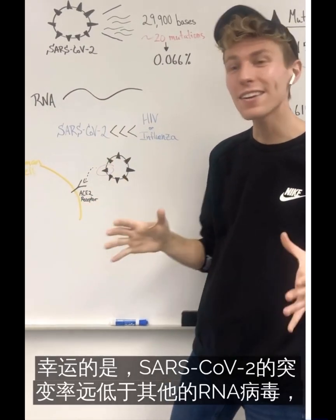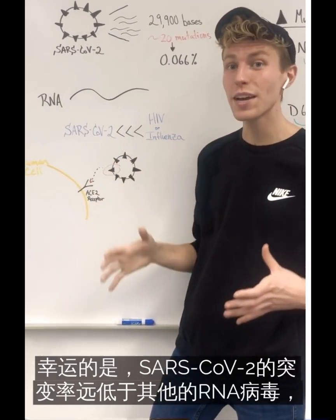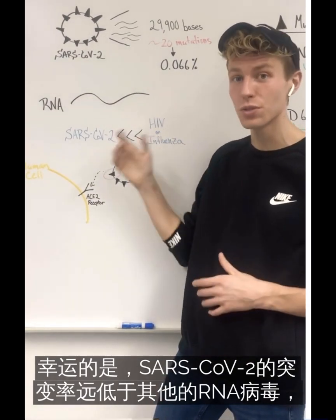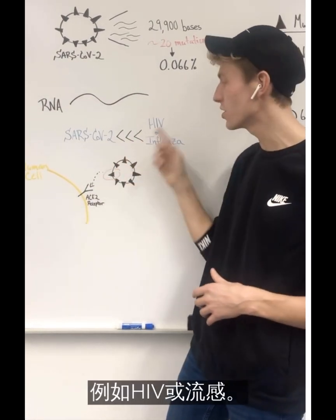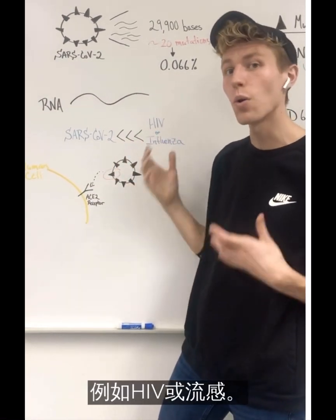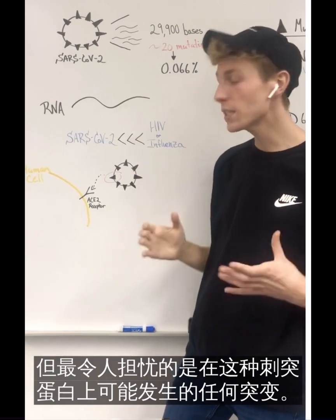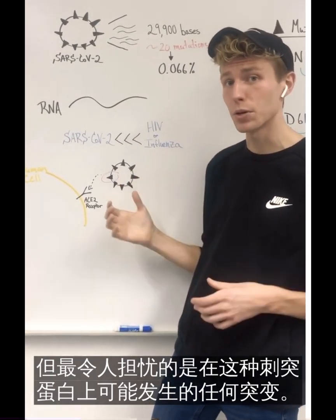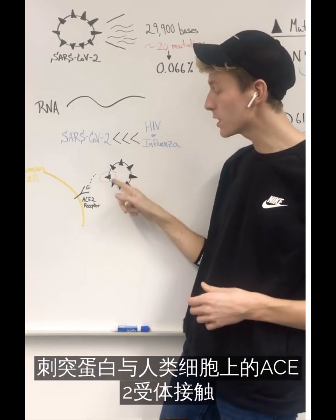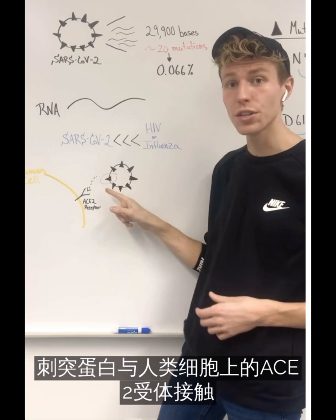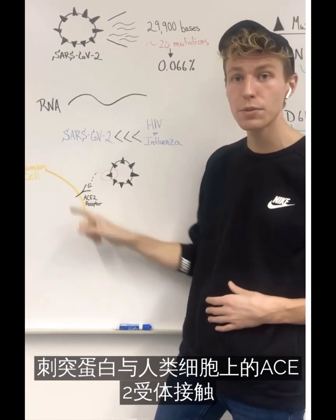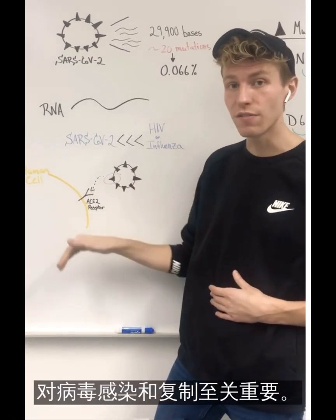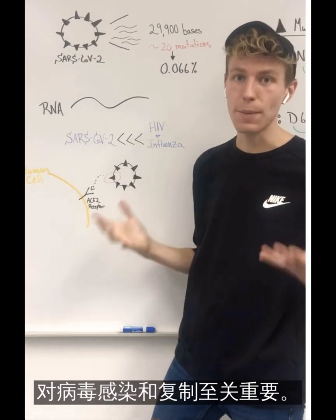Luckily, SARS-CoV-2's mutation rate is far less than other viruses that also use RNA, such as HIV or the flu. But what's of most concern is any mutations that could occur on the spike protein. The spike protein is critical to interact with the ACE2 receptor on our human cells to allow the virus to infect and then replicate.